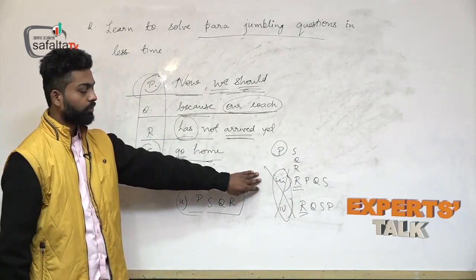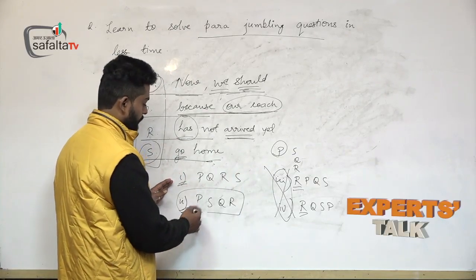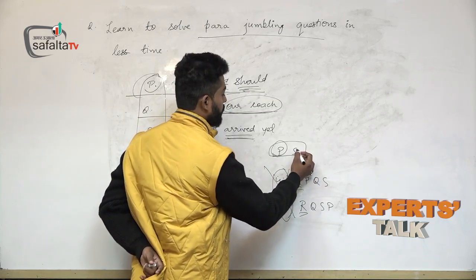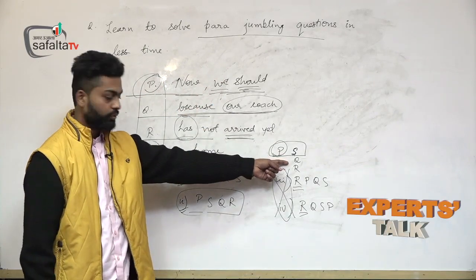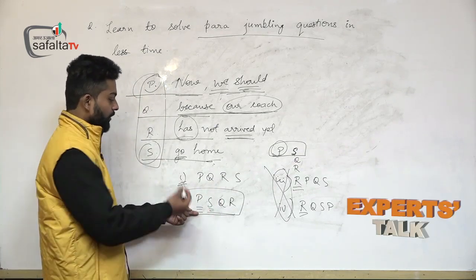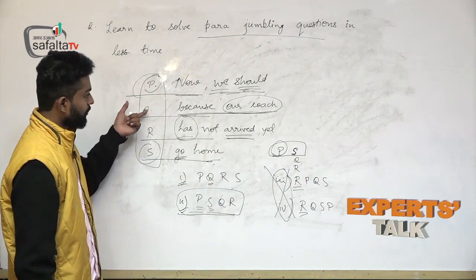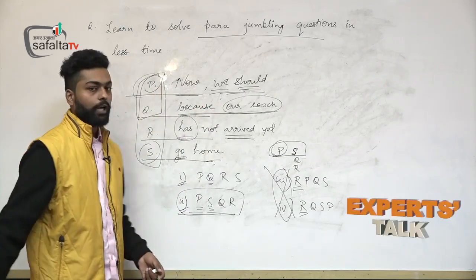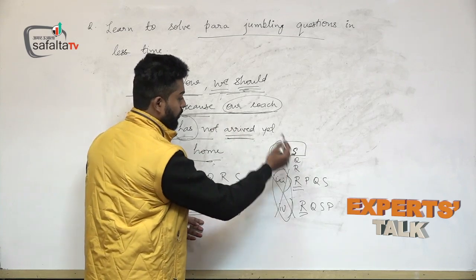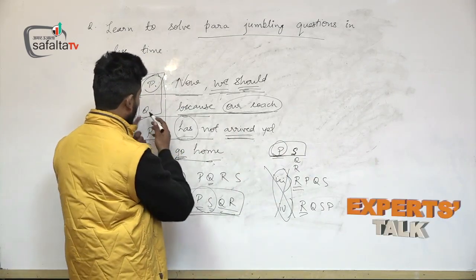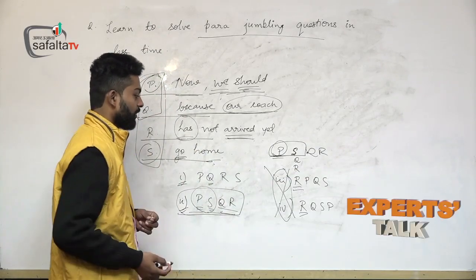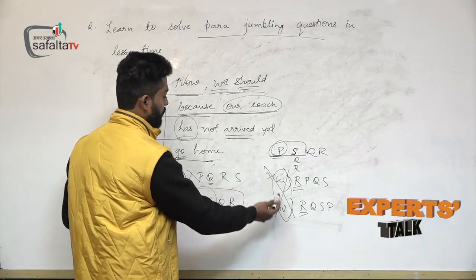Now you only have a selection between the two options that start with P. As soon as you identify the second sentence — 'go home' — you are confirmed that after P, S should be used. Go to the option in which S is after P. In option PSQR, S is after P. Now check if Q and R are used correctly. If putting Q and R in sequence gives a meaningful sentence, there is no need to look at any other option.